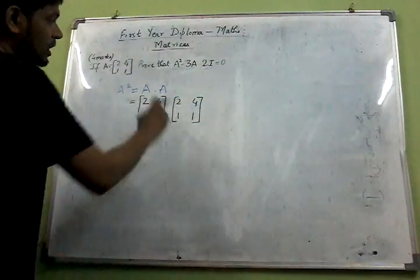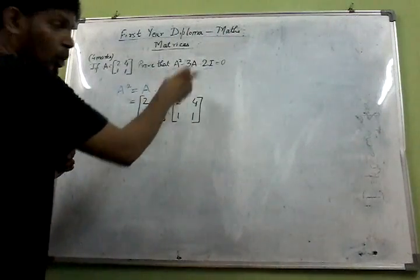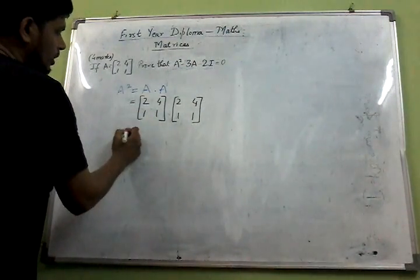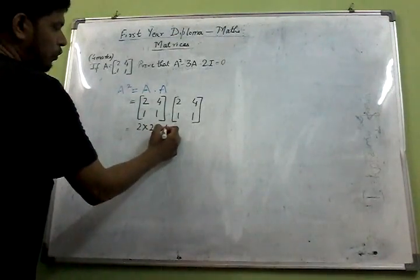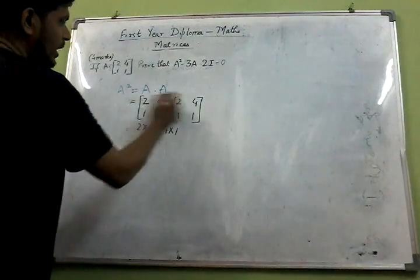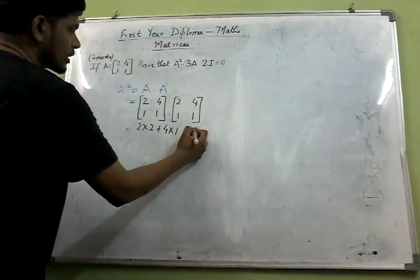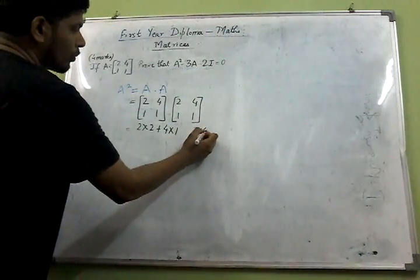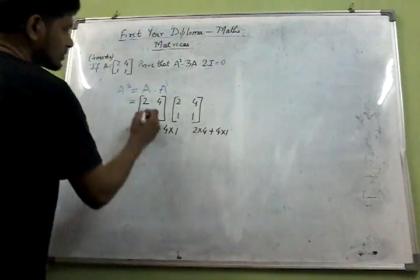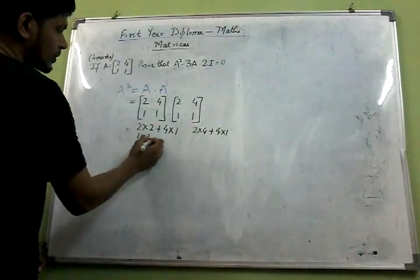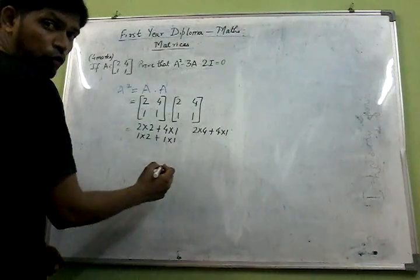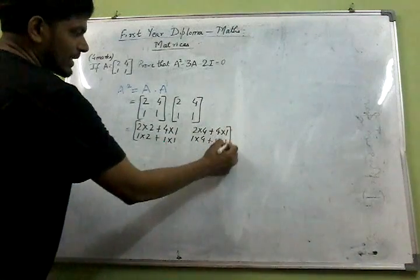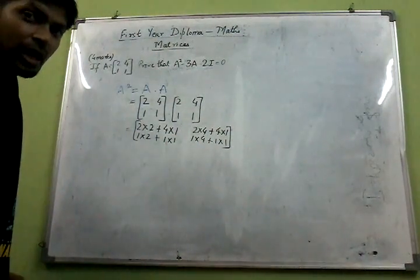We need to multiply first row with first column, first row with second column, second row with first column, second row with second column. So this will be: 2 into 2 plus 4 into 1, then 2 into 4 plus 4 into 1, then 1 into 2 plus 1 into 1, then 1 into 4 plus 1 into 1. Here we have shown in detail how the matrices are multiplied.